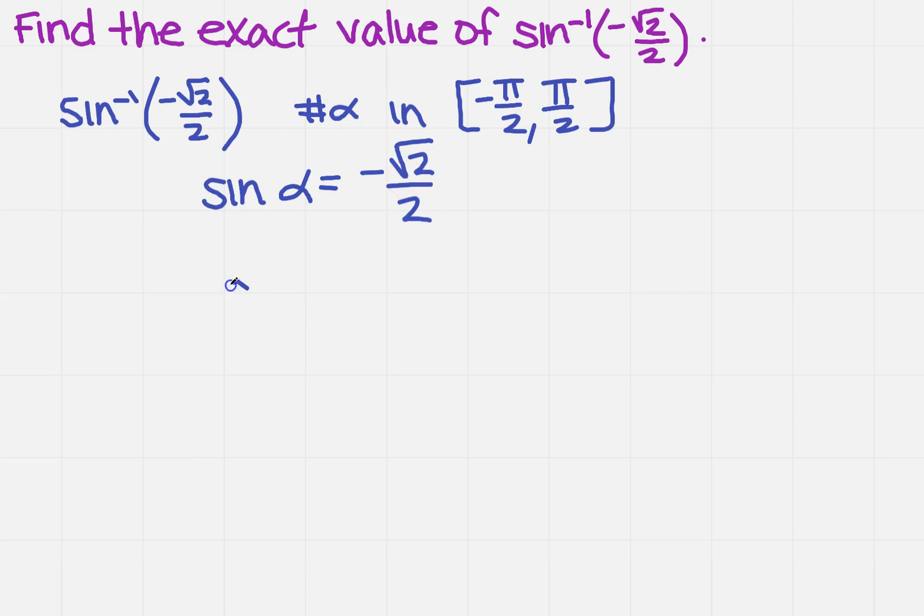If you recall, the sine of negative pi over 4 equals negative square root of 2 over 2. Remember, if you don't have it memorized, you can use the unit circle or calculations to get this value.